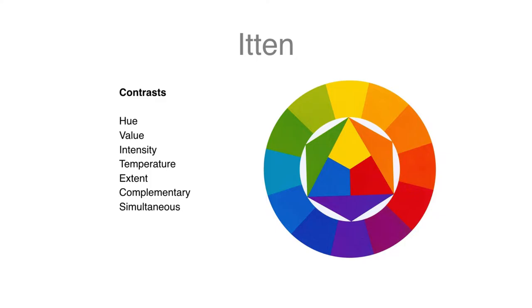So the contrast of hue, the visual difference, say, between yellow and yellow-green would be the amount of blue that's in yellow-green versus the amount of yellow. The direct contrast of complements, the indirect contrast of simultaneous, which both complementary and simultaneous deal with the afterimage effects.